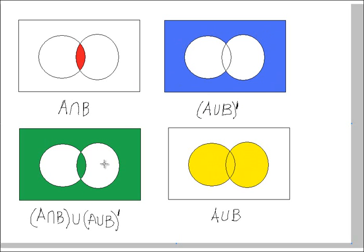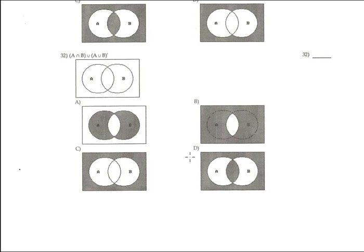Finally, the union between the red part and the blue part is the green region. Copying and pasting this result, that part is the answer — it corresponds with option D. The final answer for problem 32 is option D.